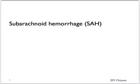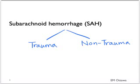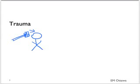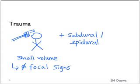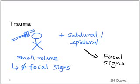First, subarachnoid hemorrhage. It can be separated into traumatic and non-traumatic causes. Traumatic subarachnoid hemorrhage tends to occur with trauma, often in combination with other traumatic bleeds. Traumatic subarachnoid bleed by itself tends to be of small volume, and therefore, besides a headache and maybe nausea and vomiting, the patient does not usually present with focal neurological signs. However, since it usually happens in conjunction with other bleeds, those bleeds typically cause neurological signs and decrease the patient's level of consciousness and GCS. As with all bleeding, the risk is increased by the use of anticoagulants.